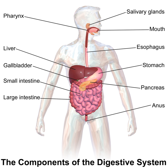In humans, dietary starches are composed of glucose units arranged in long chains called amylose, a polysaccharide. During digestion, bonds between glucose molecules are broken by salivary and pancreatic amylase, resulting in progressively smaller chains of glucose, and ultimately simple sugars glucose and maltose that can be absorbed by the small intestine. Lactase is an enzyme that breaks down the disaccharide lactose into glucose and galactose. Approximately 65% of the adult population produce only small amounts of lactase and are unable to eat unfermented milk-based foods — commonly known as lactose intolerance. More than 90% of peoples of East Asian descent are lactose intolerant, in contrast to about 5% of people of Northern European descent.